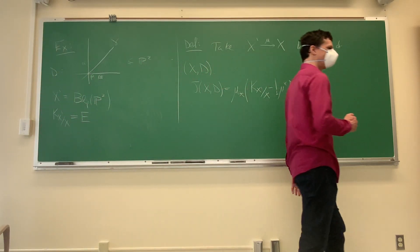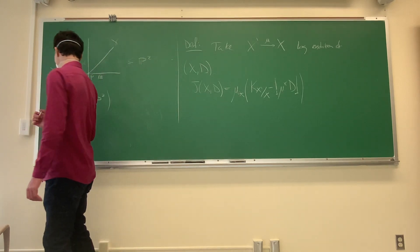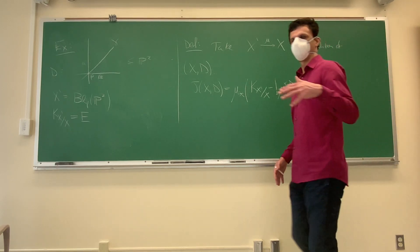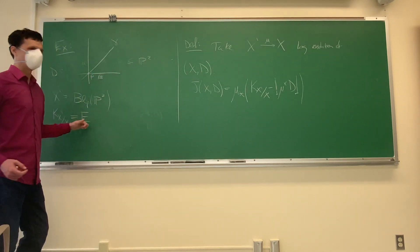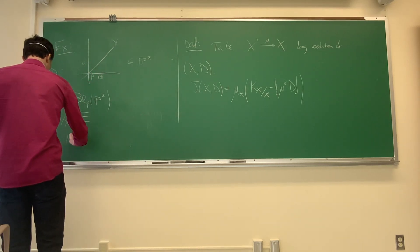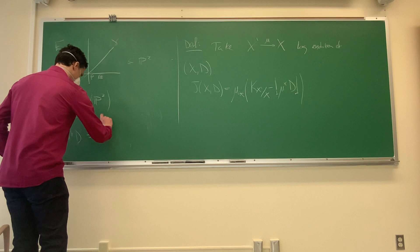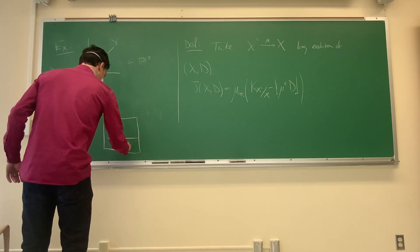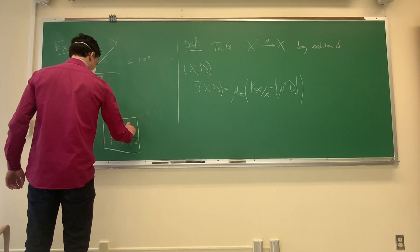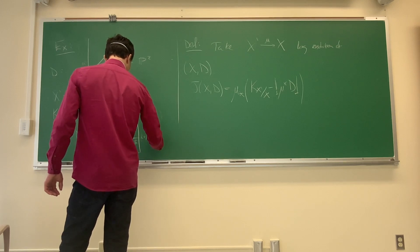Let's make it a little more interesting and do three lines with coefficients α, β, and γ. The key formula: K_{X'/X} equals the exceptional divisor E. If I take μ* D, I get my surface with a minus-one curve E and the three lines — strict transforms with coefficients α, β, γ — and the multiplicity along E is just α + β + γ.